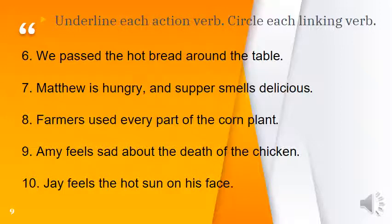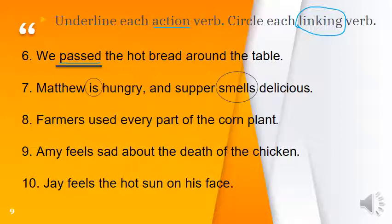Next exercise: underline the action verb and circle each linking verb. Number 6: 'We passed the hot bread around the table' — 'passed' is an action verb. Number 7: 'Matthew is hungry and supper smells delicious' — 'is' is clearly a linking verb; test 'smells' by substituting 'is': 'Supper is delicious' — yes, so 'smells' is also a linking verb.